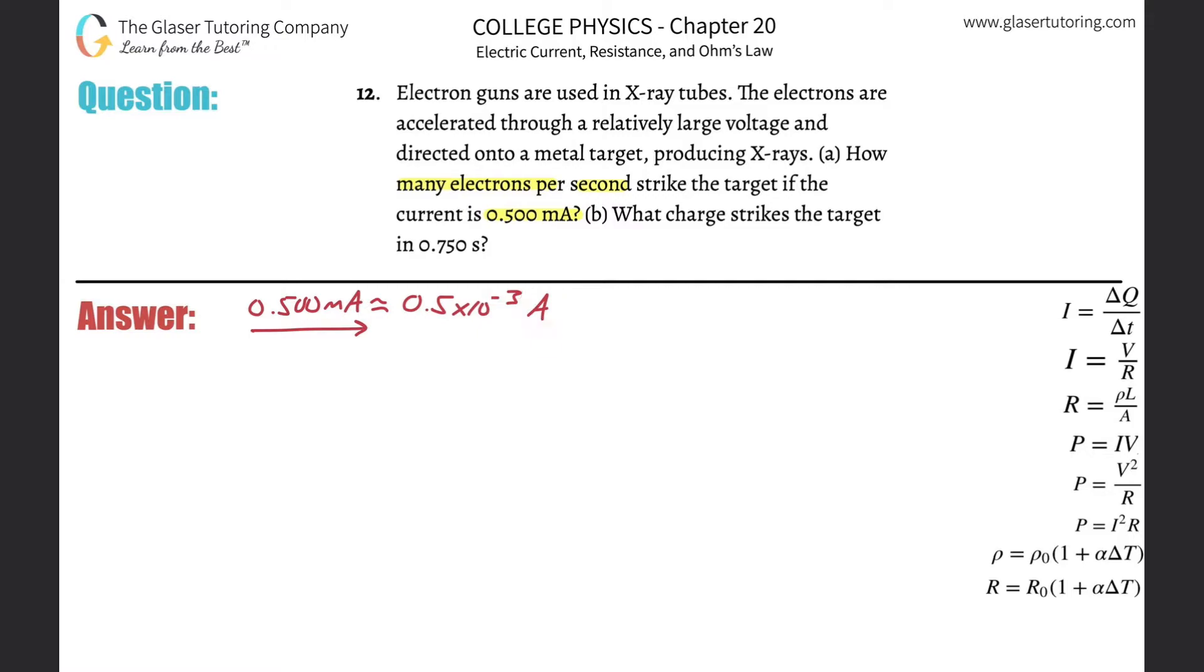Now remember an amp is the same thing as saying a coulomb per second, or the number of coulombs, or the amount of charge passing through a point per single second. So if we know the current and we want to find out how many electrons are passing through per second, how do we do it?